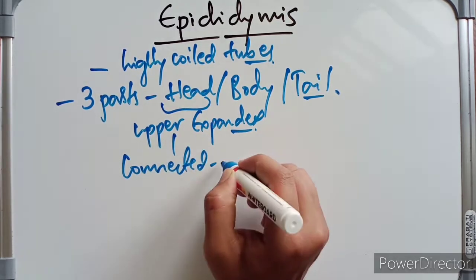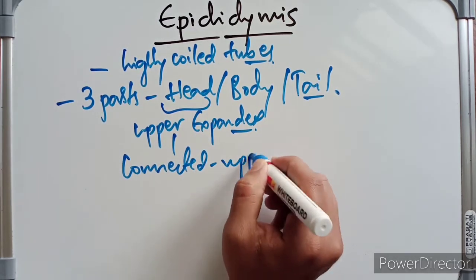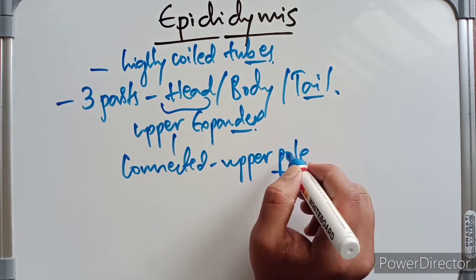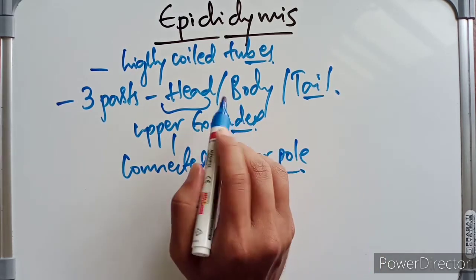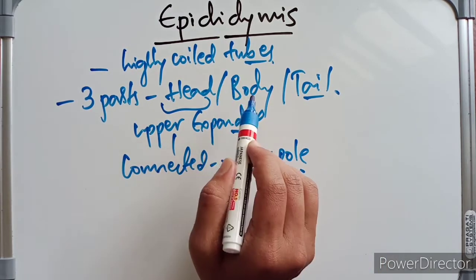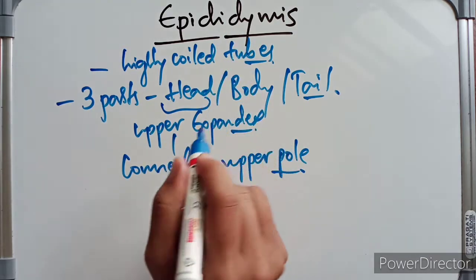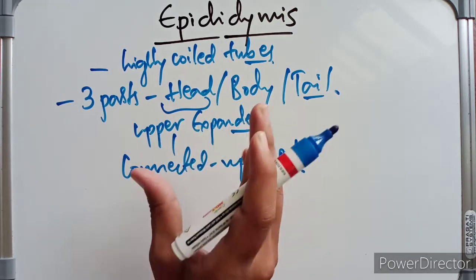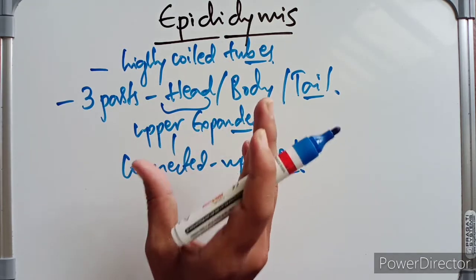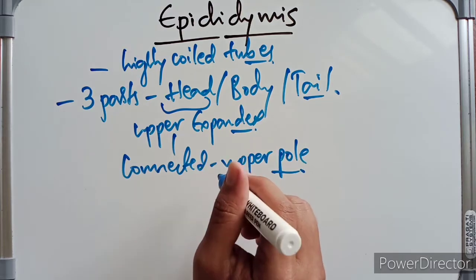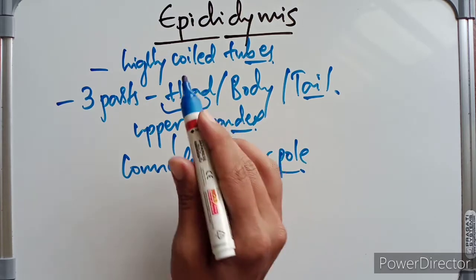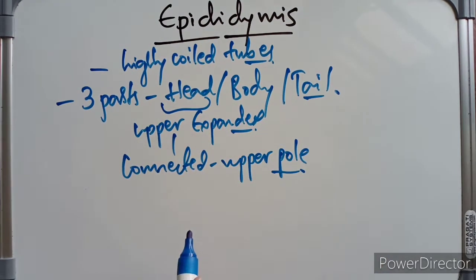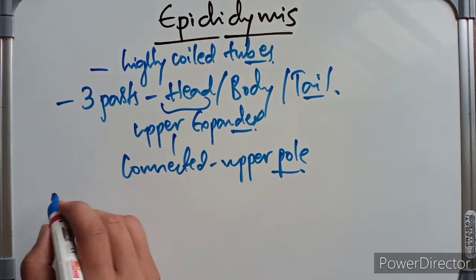The body is the middle part and the tail is the lower part. The body is made up of a single highly coiled duct of the epididymis, which emerges from the tail as the vas deferens.